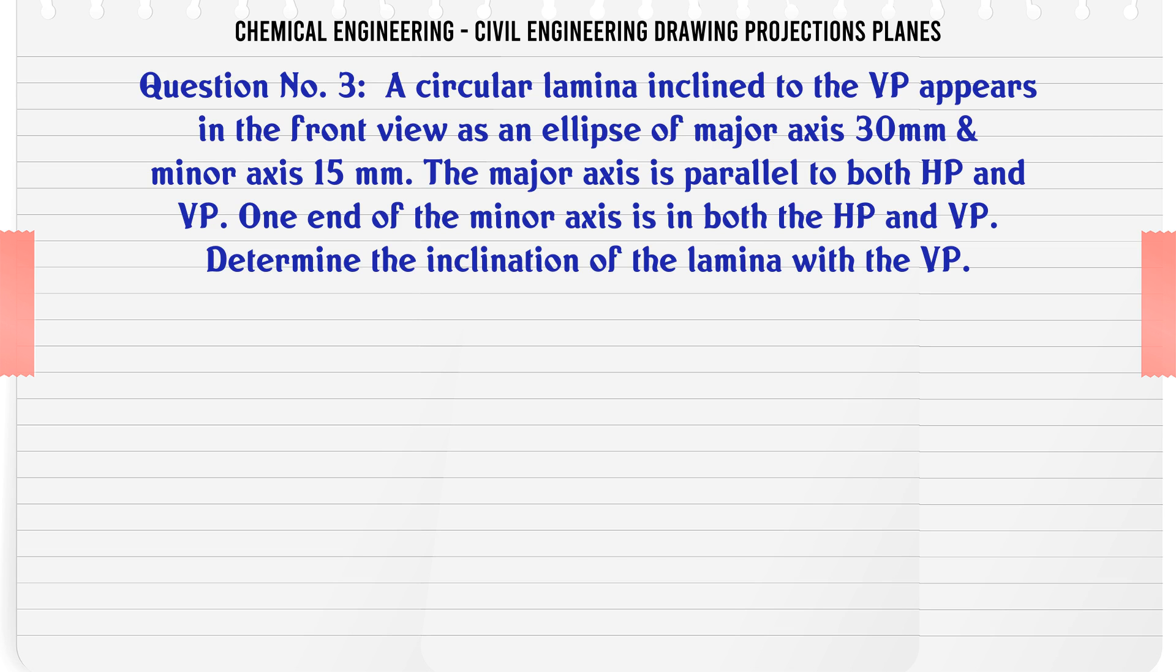lamina inclined to the VP appears in the front view as an ellipse of major axis 30 mm, minor axis 15 mm. The major axis is parallel to both HP and VP. One end of the minor axis is in both the HP and VP. Determine the inclination of the lamina with the VP. Options: A. 45°, B. 90°, C. 60°, D. 105°. The correct answer is 60°.